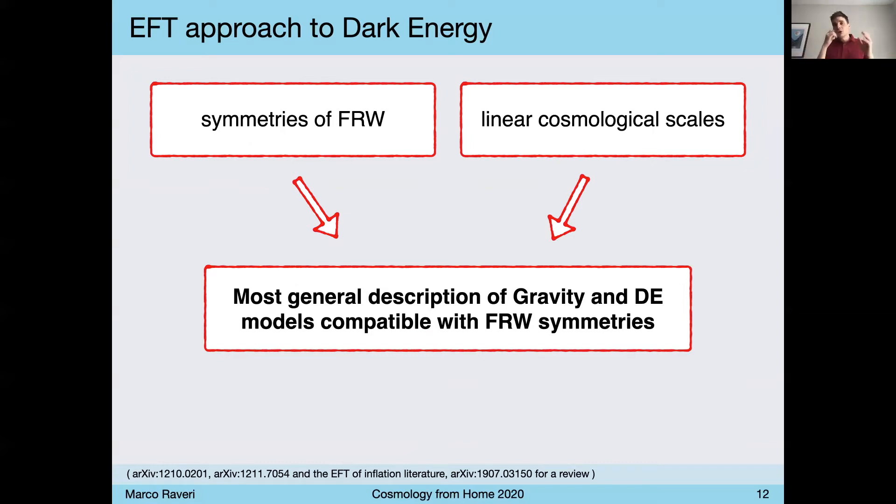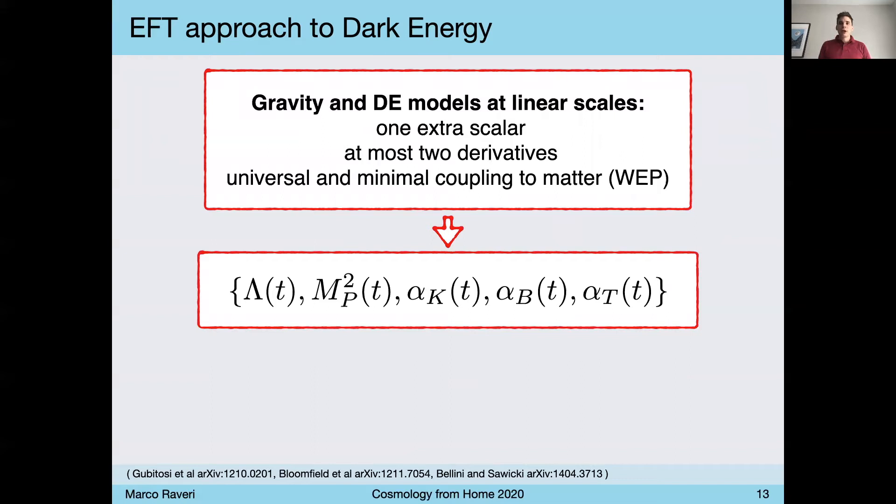And then restricting those to the physical limit that we are interested in, which is very large cosmological scales. And people have worked out what's the most general description of gravity and dark energy compatible with these two requirements. And this ends up having one extra scalar degree of freedom. And if we stop at two derivatives in the theory that has at most two derivatives and it's universally coupled to matter.